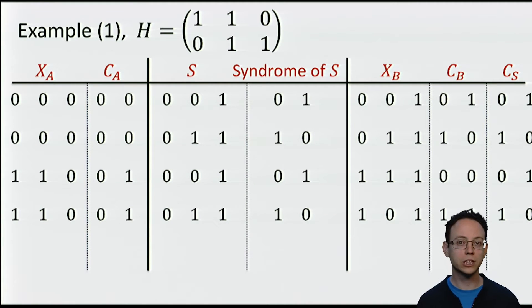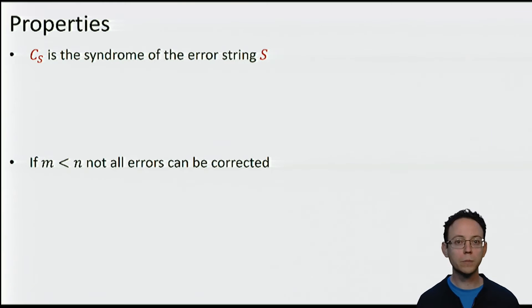After these computations we can observe that as suggested before, CS seems to only depend on the error string. We can prove very easily that CS is indeed the syndrome of the error string S. For this, let us write CS as CA plus CB. And CA equals the parity check matrix H times XA and CB is H times XB. So this then equals H times XA plus XB and XA plus XB is nothing else than S.